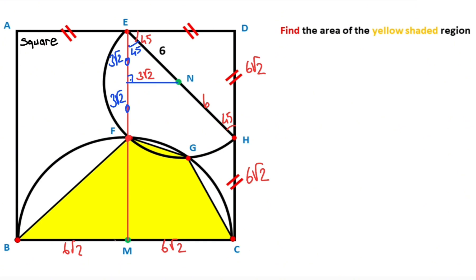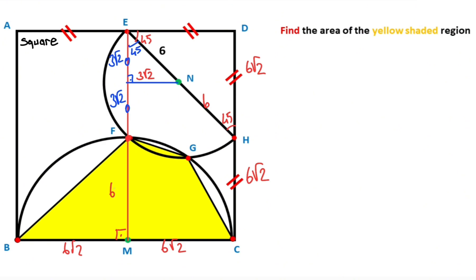So after that, if you focus on triangle MBF — here is 90 degrees, and this length is 6√2 because of the radius. Then if we connect these points like this, notice that these lengths are equal because of the radius, and these are also equal because of the radius.